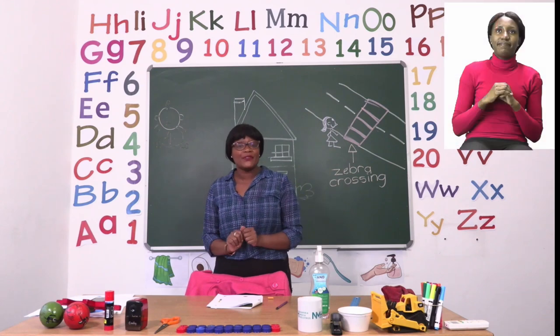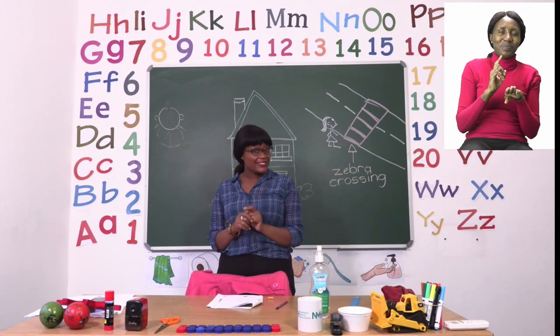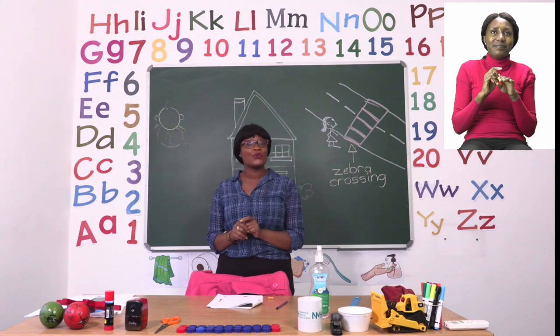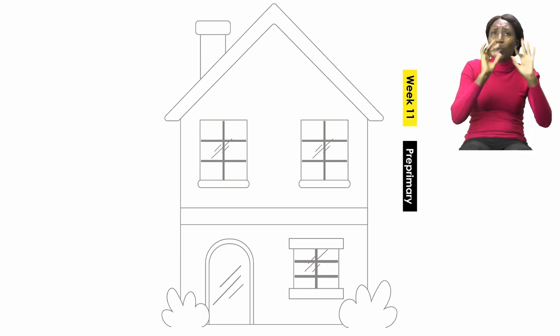For our first activity boys and girls we are going to go to page three. On page three we can see that there is a beautiful house. Just look at it. Wow.